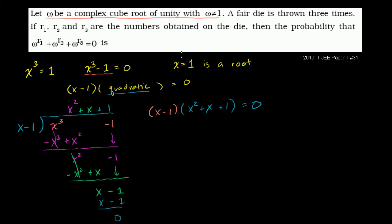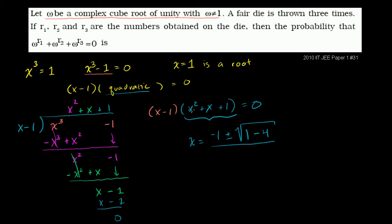To find the non-1 roots, we just need to find the roots of x squared plus x plus 1. These roots will make that expression equal to 0. I can already guess they're going to be complex, so we'll use the quadratic formula. x equals negative b — b is 1 — so negative 1 plus or minus the square root of b squared, which is 1, minus 4 times a times c — both a and c are 1, so minus 4 — all over 2 times a, which is just 2. So x equals negative 1 plus or minus the square root of negative 3, over 2.